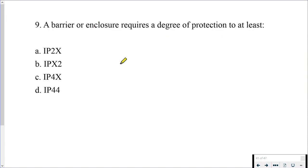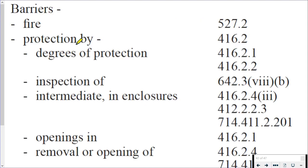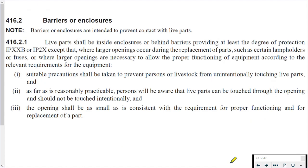Question 9: a barrier or enclosure requires a degree of protection to at least, and then we've got these IP codes. So wherever it is we're going, we are skimming for IP codes. We're looking at barriers or enclosures, we're also looking for this term 'at least,' and we're looking for degree of protection as well. So barriers or enclosures in the index, we have degrees of protection, and we've got 416.2.1 and 416.2.2. If we look at 416.2.1, there you go, straight off the bat we've got IP codes, and then reading around about the IP codes we see that at least a degree of protection, there you go, IPXXB or IP2X.